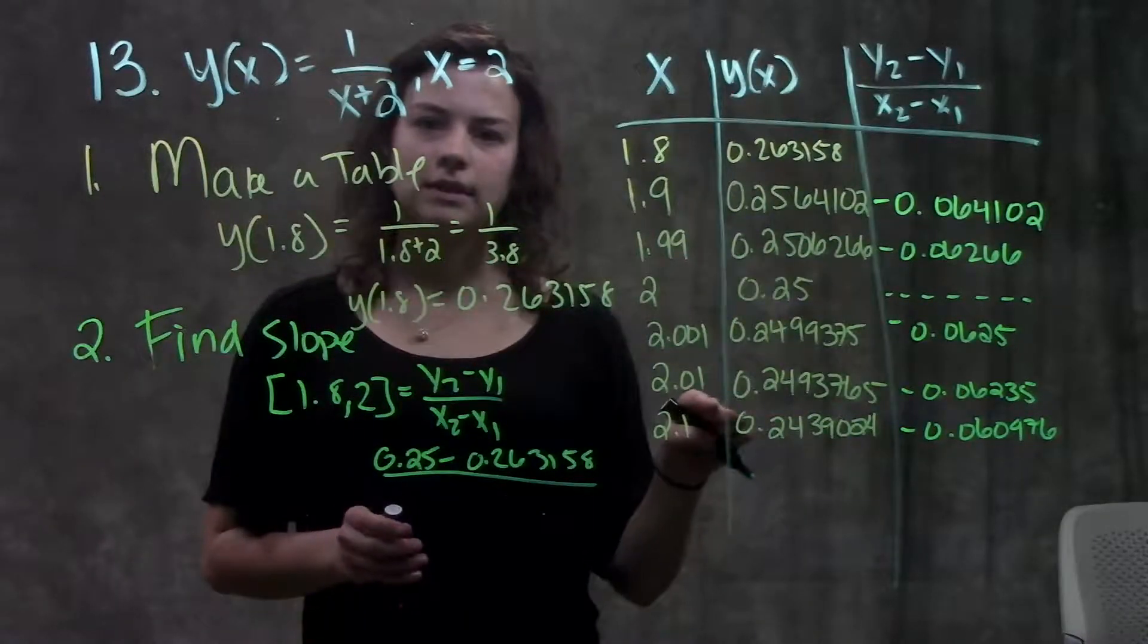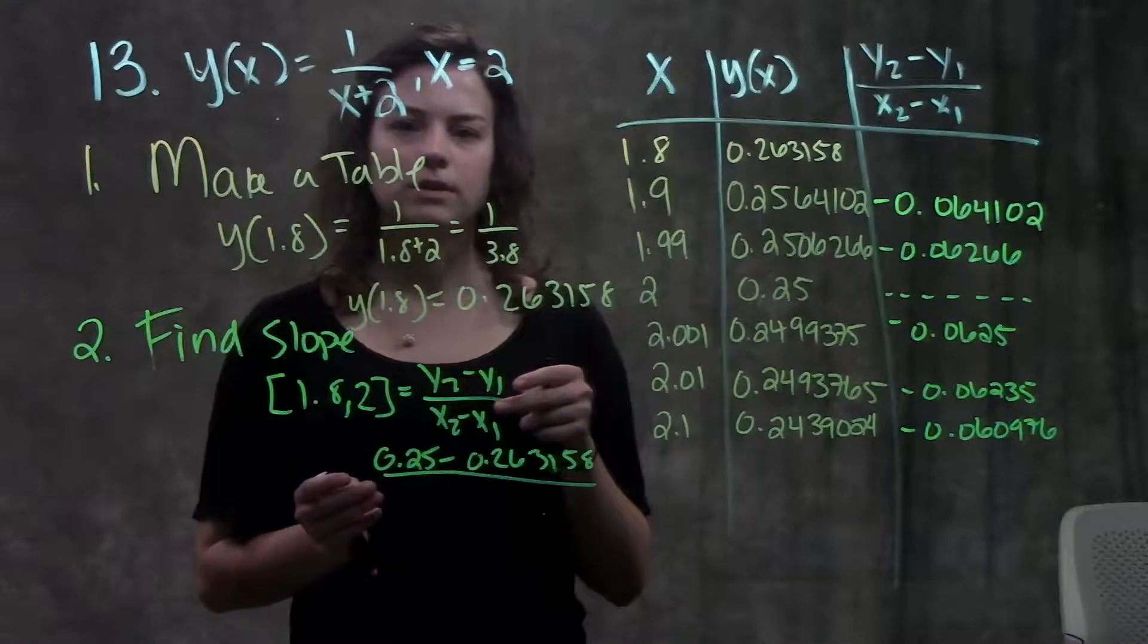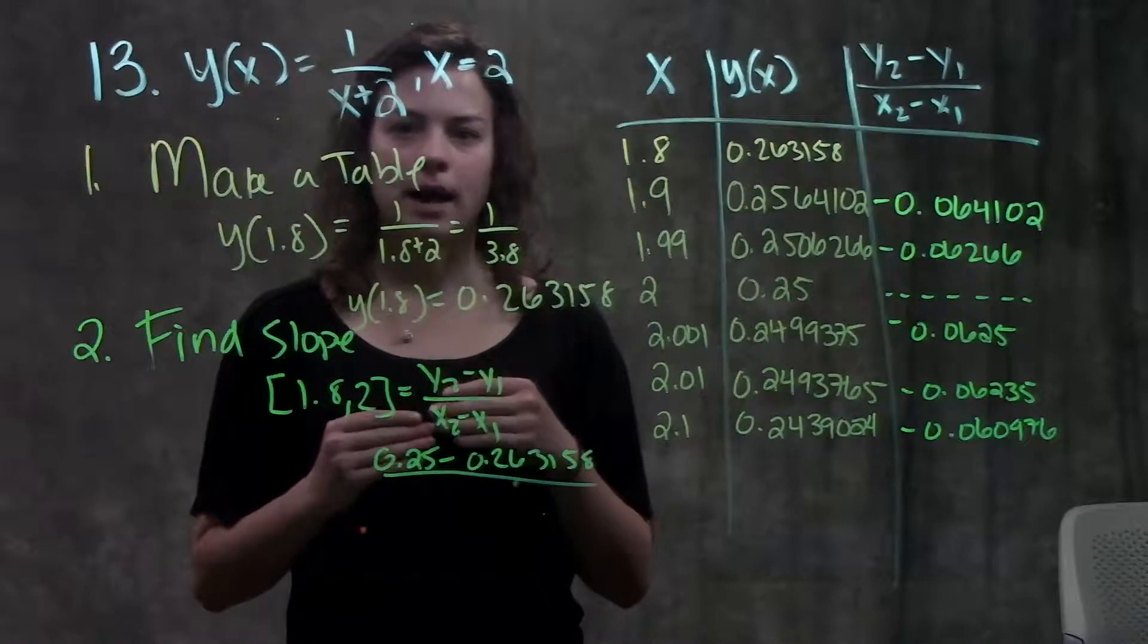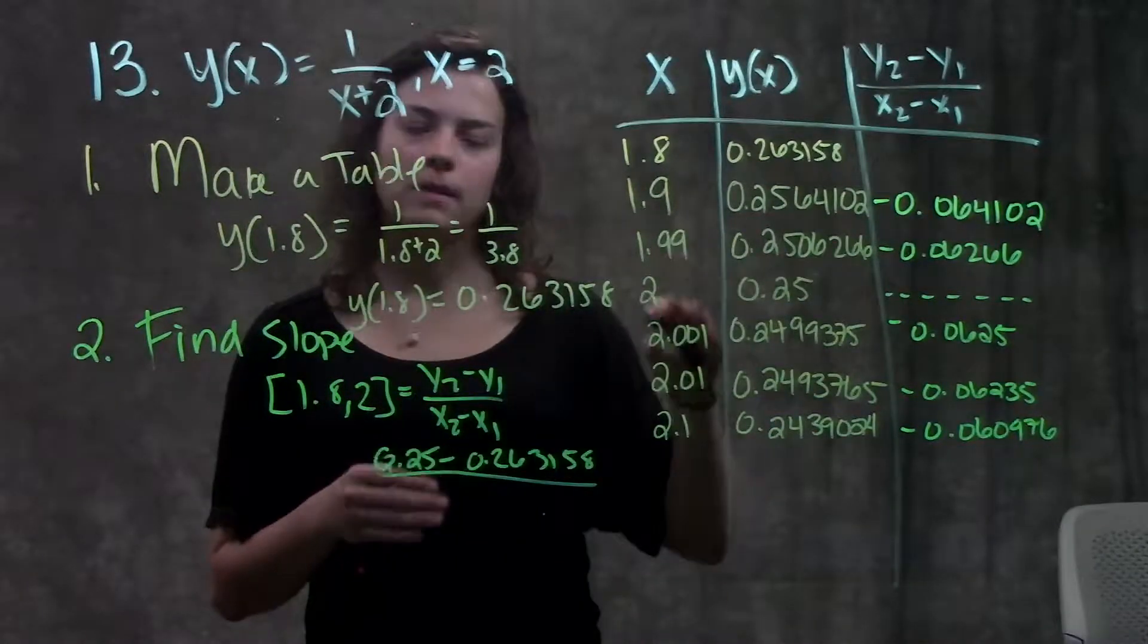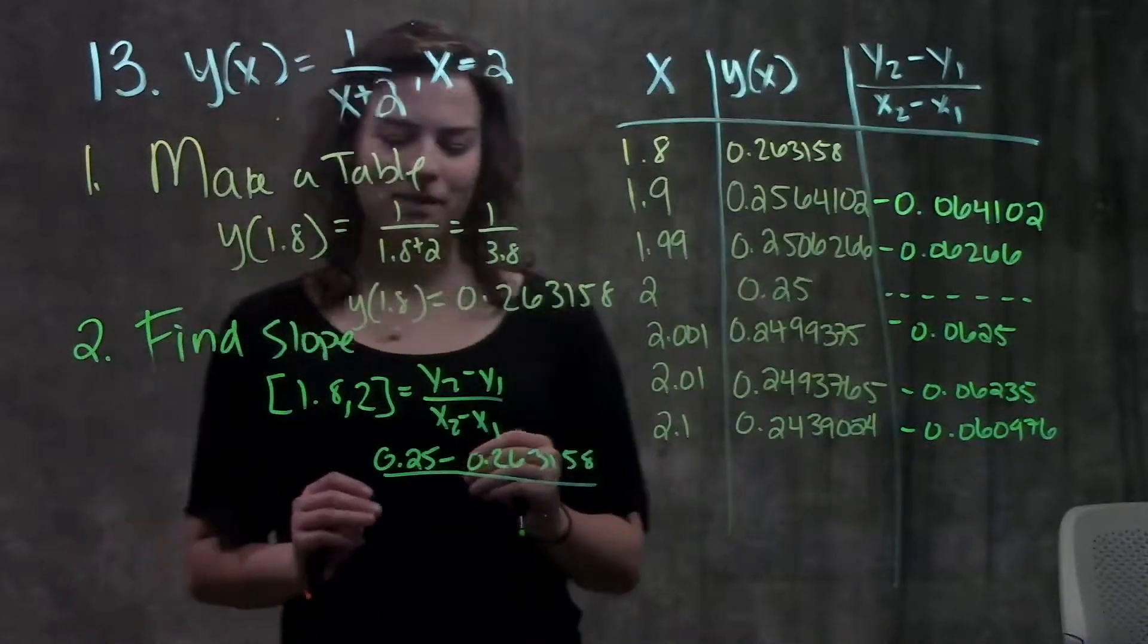Notice I kept a bunch of decimals in this table. That'll help you get a more exact answer. If you only leave two or three decimals in there, you won't really be able to see the pattern of where the slope is going. So you want to keep at least four or five decimals in your answers. All right, side note, let's get back to the problem.